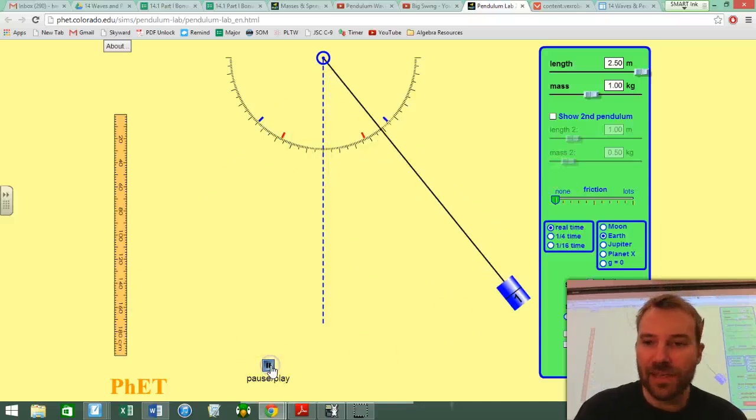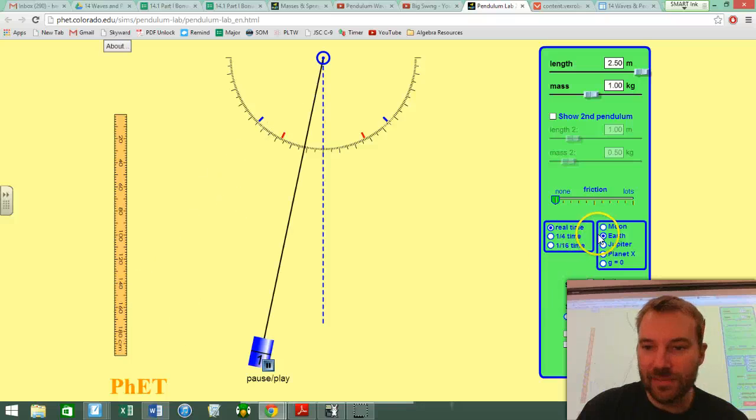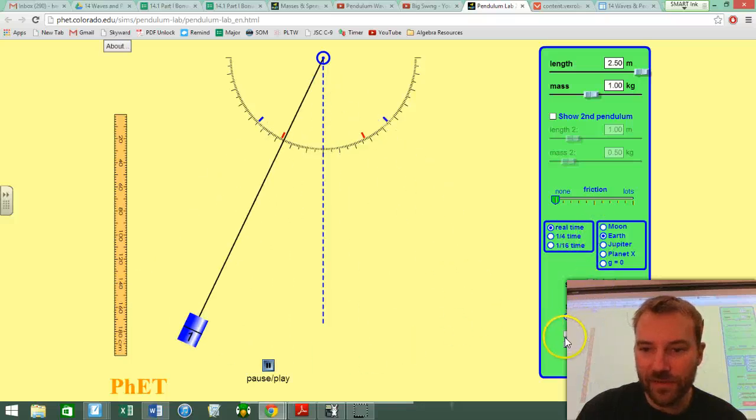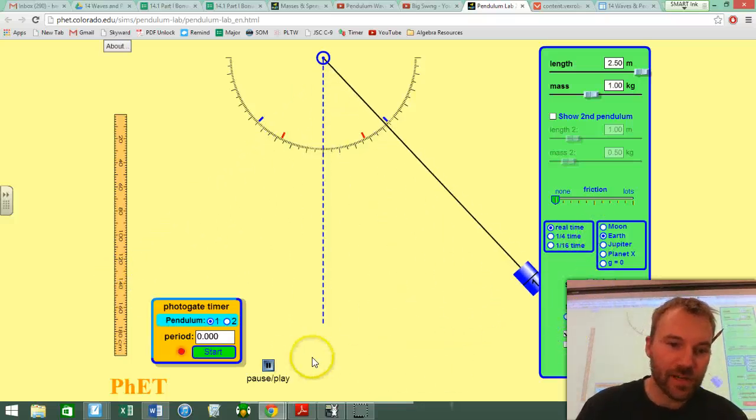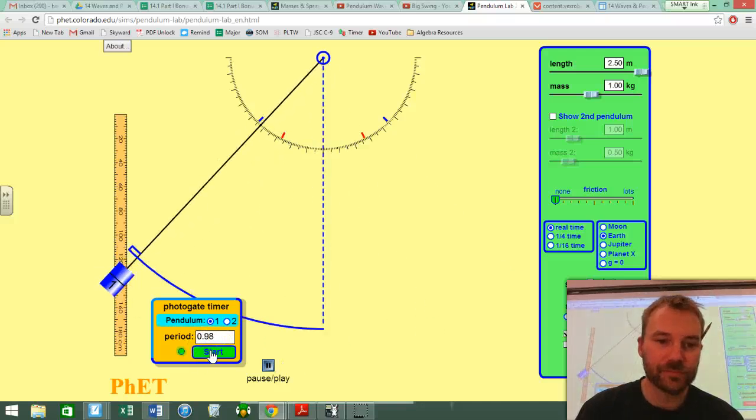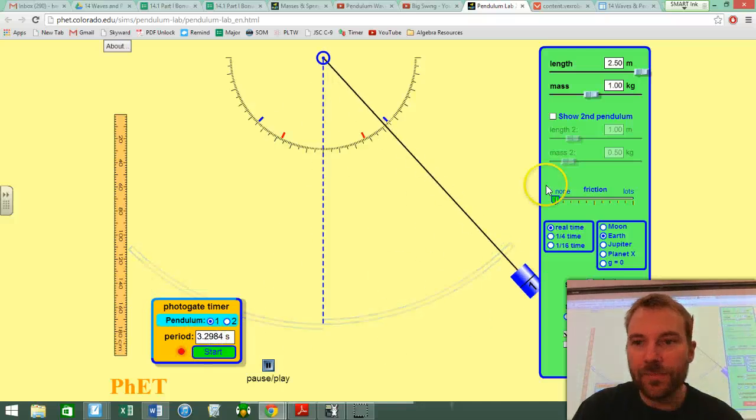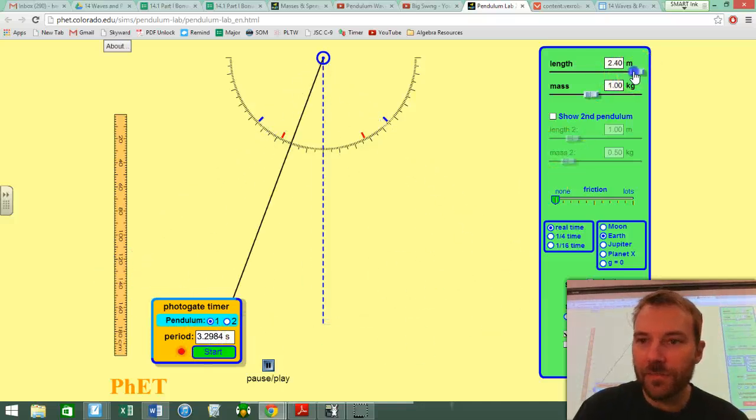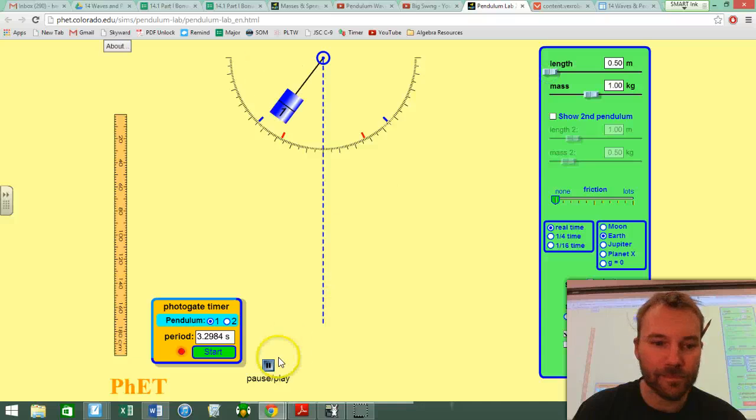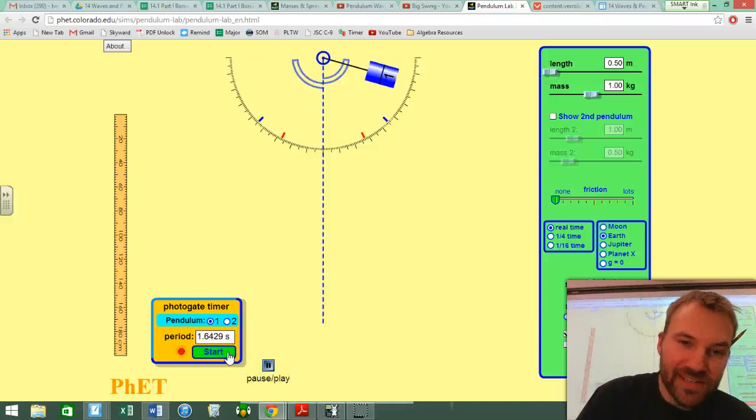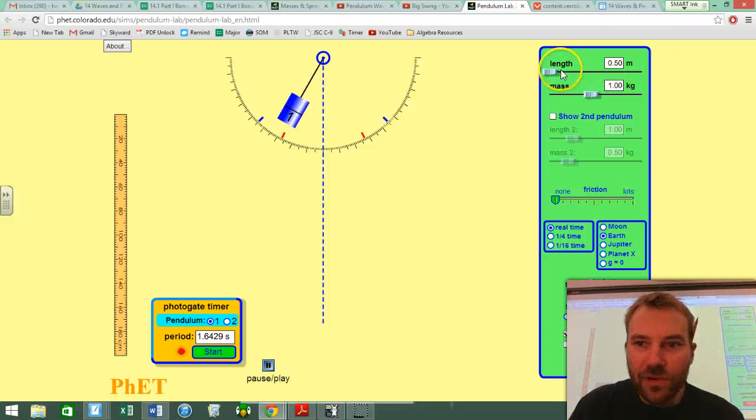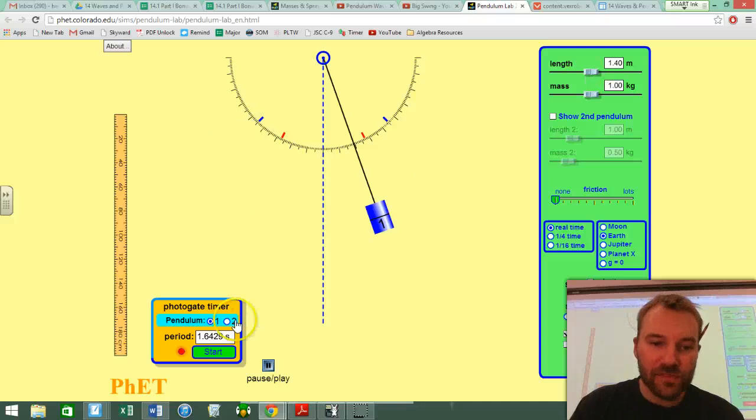But what happens, let's say I make my... Let's figure out how much time this takes. So I can use the photogate timer. It'll start the timer. How long does it take to repeat itself? 3.3 seconds. I make this thing a lot shorter. Let's time it. 1.6 seconds. So I make it really short, I make it really long, I make it someplace in between.